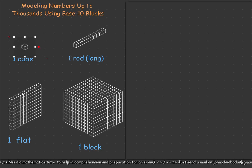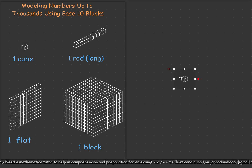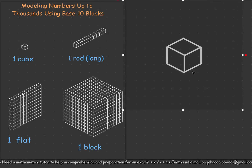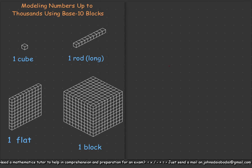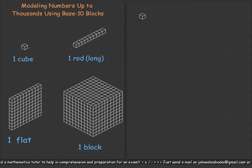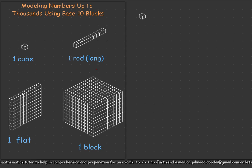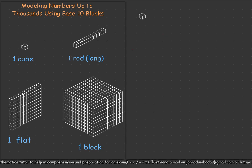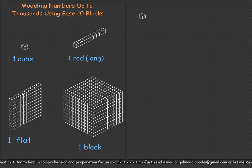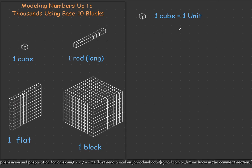This first one is what we call a cube — it is a cubic form. Since we are talking of base-10 or multi-base blocks, and we want to limit ourselves to thousands, we will represent one cube as a unit. So one cube is just one unit.